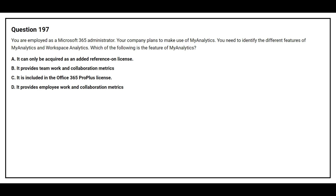Option A: it can only be acquired as an add-on reference on a license. Option B: it provides team work and collaboration metrics. Option C: it is included in the Office 365 Pro Plus license. Option D: it provides employee work and collaboration metrics. The correct answer is Option D: it provides employee work and collaboration metrics.